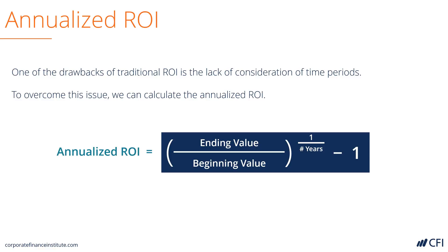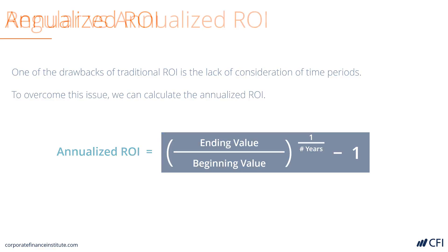We take the ending value divided by the beginning value and raise it to the power of 1 divided by the number of years. This is the same thing as a compound annual growth rate.